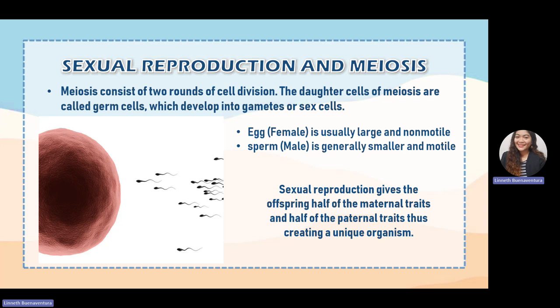The egg is described as the female gamete — it is usually large and non-motile. Sperm, the male gamete or sex cell, is generally smaller and motile. The sperm needs to swim from the vagina, through the cervix, into the uterus, and into the fallopian tube in order to fertilize an egg. The formation of female gametes is called oogenesis, and the formation of sperm is called spermatogenesis.